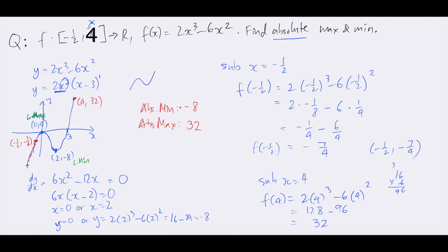You can have an absolute minimum at a turning point and an absolute maximum at an end point, or vice versa. The best way to do these questions is: get a rough sketch of the graph, determine your turning points and find their y-values, find the end points and their y-values, then just compare them all. It's usually easiest when you plot these on a graph so you can clearly tell where your points are and how high or low they are.